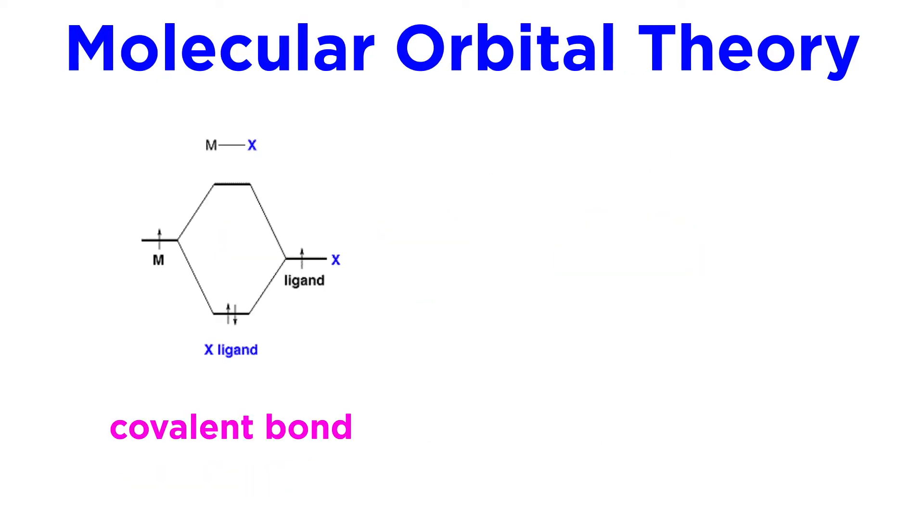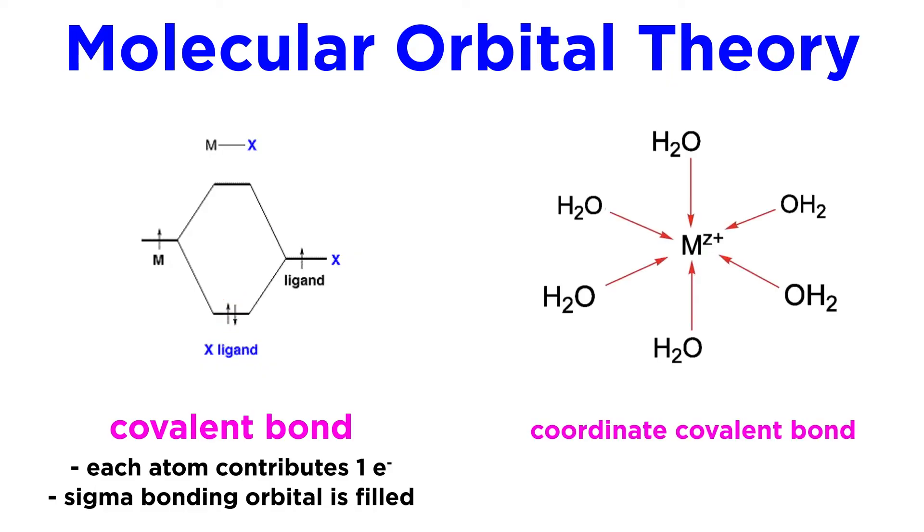From the perspective of molecular orbital theory, that would look like this, where each contributes one electron, so both of them sit down here in this sigma bonding orbital.